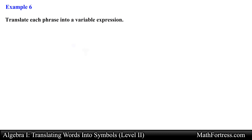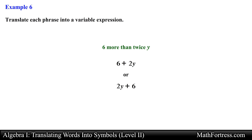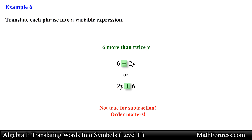Let's try a slightly more complicated one: '6 more than twice y.' This phrase has two keywords — 'more,' which means addition, and 'twice,' which means multiplication. So it translates to 6 more than 2y, or 2y plus 6. Notice that with addition, the order in which the numbers are added is not important. A word of caution: this is not the case for subtraction, so be careful — the order in which numbers are subtracted matters.